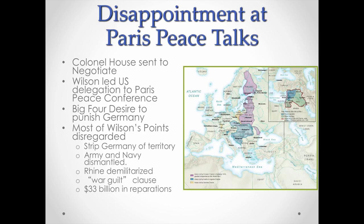At the Paris peace talks, the United States sent Colonel Edward House to negotiate and prepare the way for President Woodrow Wilson, who came in as a hero. Wilson led the U.S. delegation to the Paris peace treaty, and the big four — England, the United States, Italy, and France — all wanted to punish Germany. Wilson had brought in the so-called 14 points that would have led to peace as he saw it, but most of these points were simply ignored and negotiated away. The big four wanted to strip Germany of its territory, dismantle their military, and forced Germany to sign a war guilt clause and agree to pay 33 billion dollars in reparations.